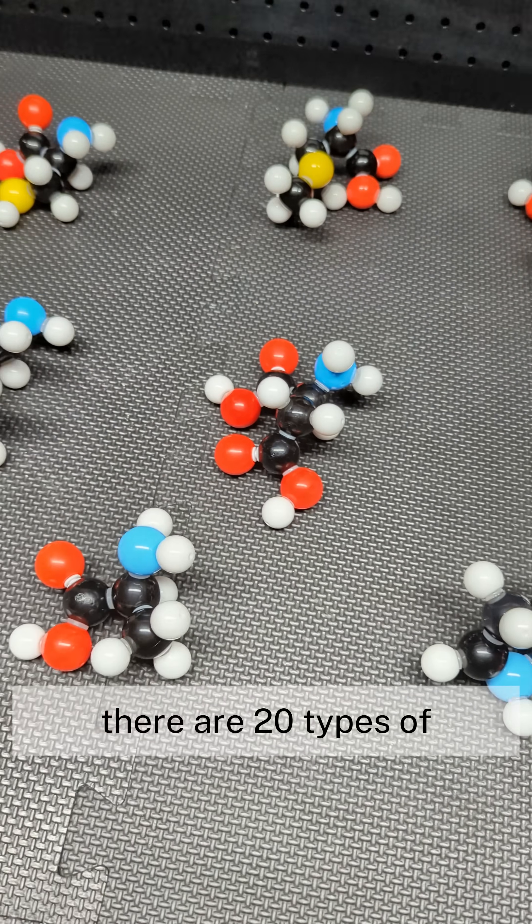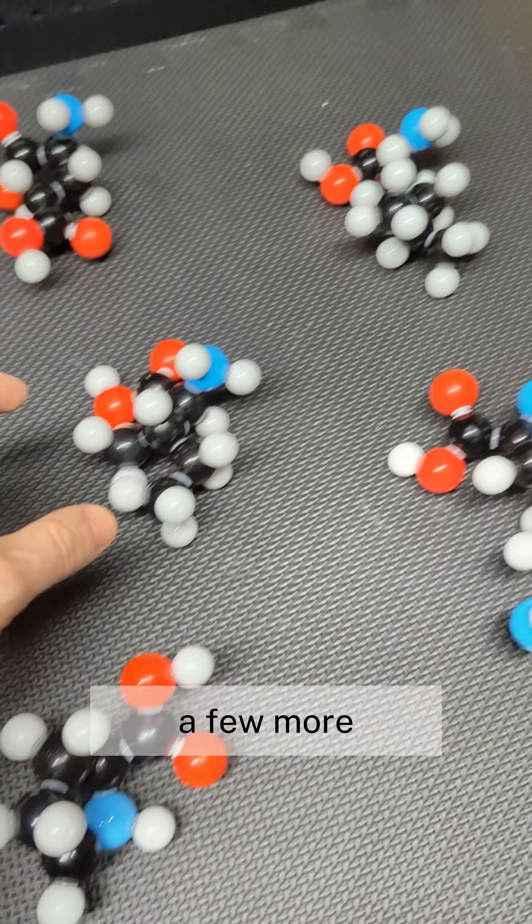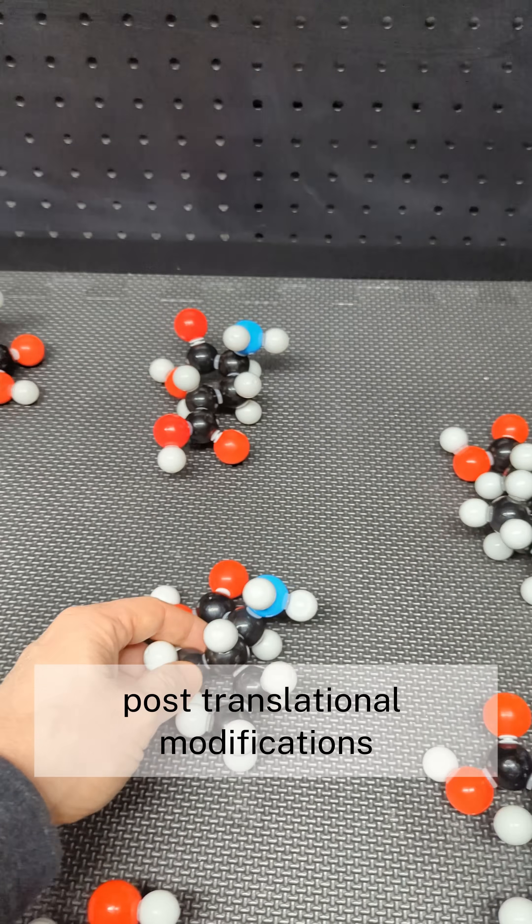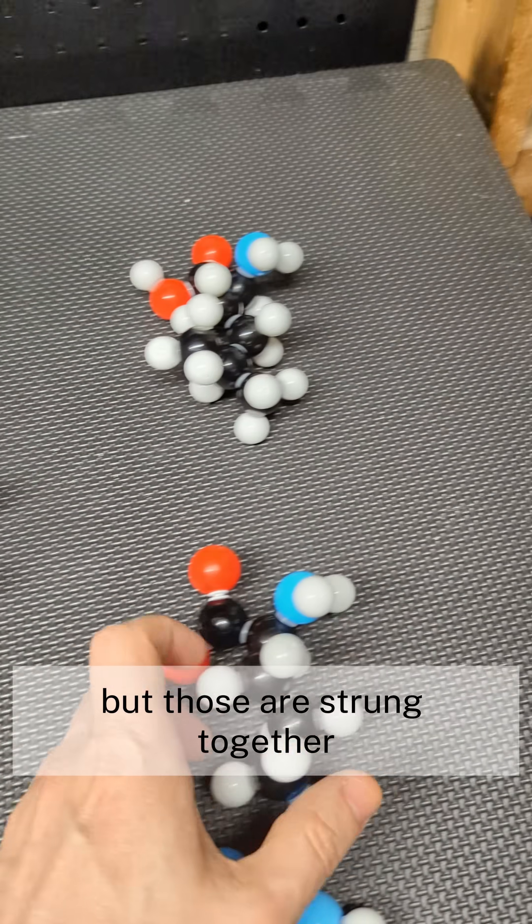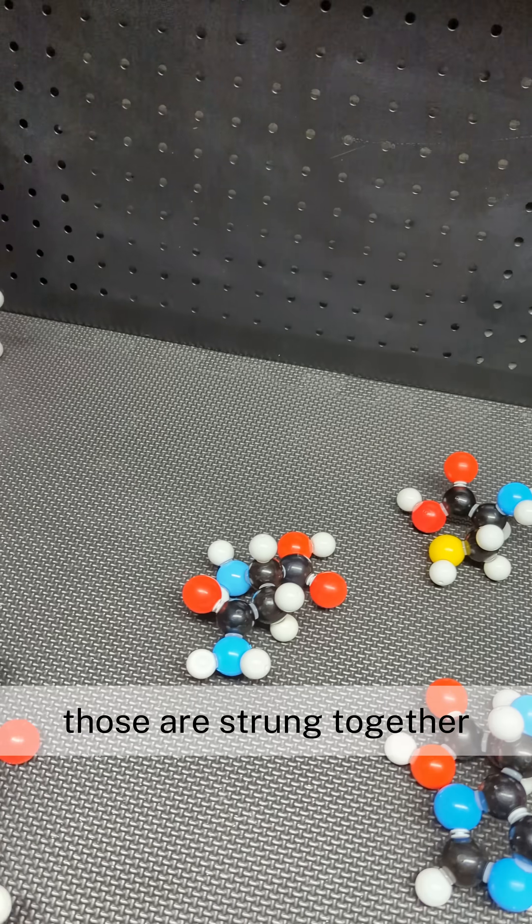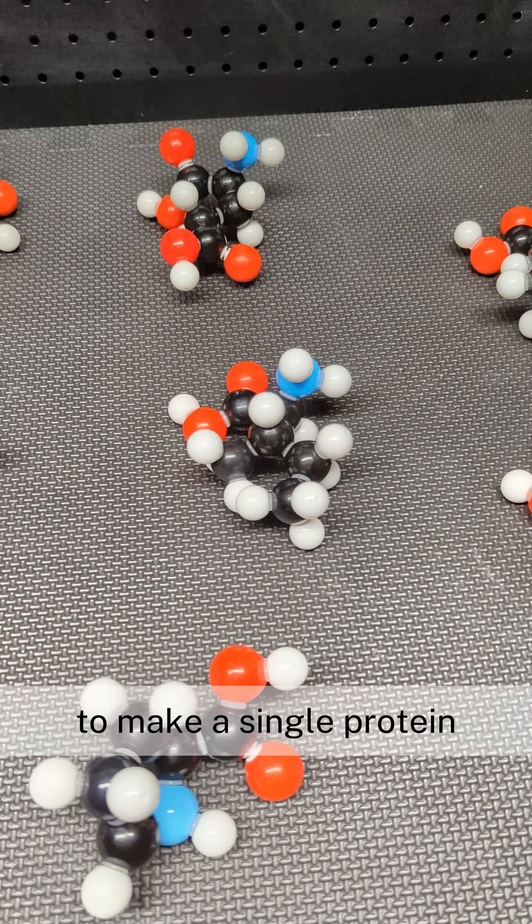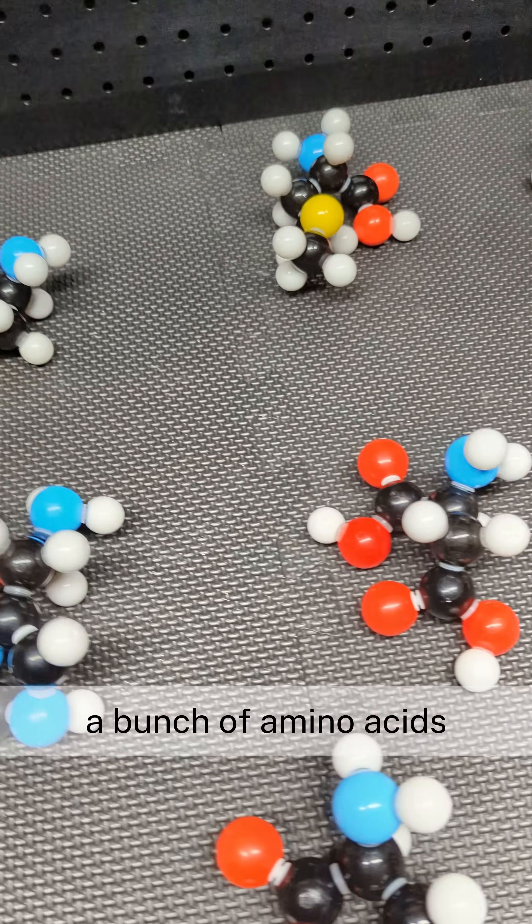There are 20 different types of amino acids in humans. A few more if you count post-translational modifications. But those are strung together. Here's a string of amino acids. Those are strung together by the hundreds, by the thousands, to make a single protein. So a protein is just a bunch of amino acids.